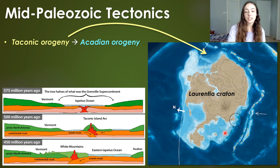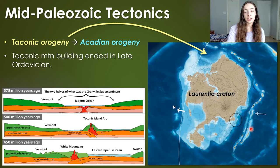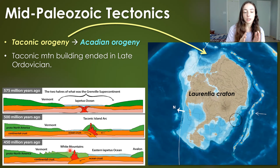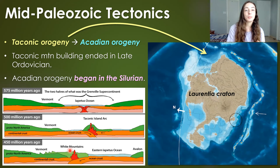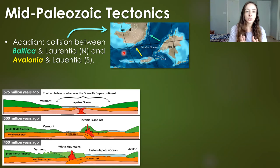The next step in the eastern margin mountain building of this craton — which eventually led to the Appalachians we have today — was the Acadian orogeny. The Taconic mountain building event involved island arcs colliding with Laurentia and ended by the late Ordovician. Then the Acadian began in the Silurian. The Acadian orogeny marks the collision between Baltica, Avalonia, and Laurentia. In the north, more so representing what is now Greenland, is where Baltica was colliding. In the southern part, representing modern North America's Appalachian area, is where Avalonia was colliding.